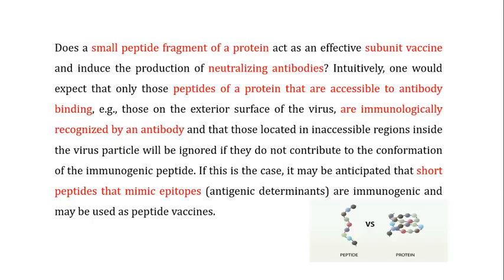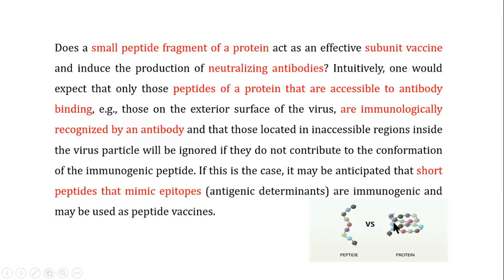The basis of peptide vaccines is that antibodies are responsible for immunity against a particular pathogen, so only those peptides of the protein that are immunologically active can be utilized as a vaccine, because they are immunogenic in nature. Peptides present in the interior of the protein or inside the pathogenic organism are not immunologically important.